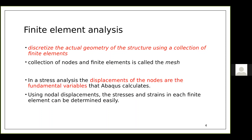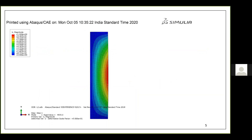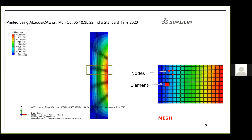In FEA, the entire structure is divided into finite elements. This image shows a finite element model of a steel plate. The structure is divided into small elements, calculations are done over each element, and combining the results gives the final result. The nodes are the junction points, and the assembly of nodes and elements together comprises the mesh.